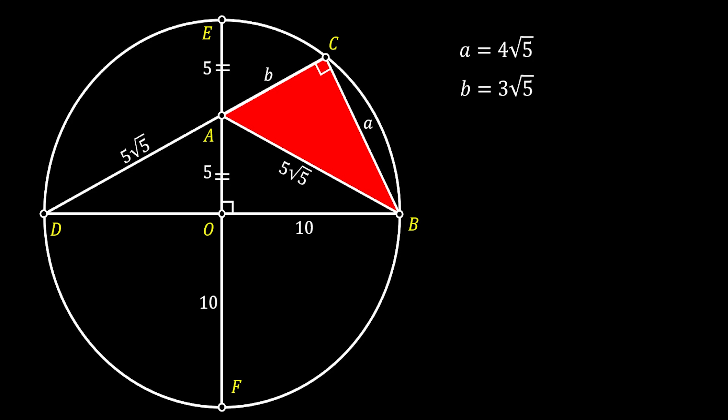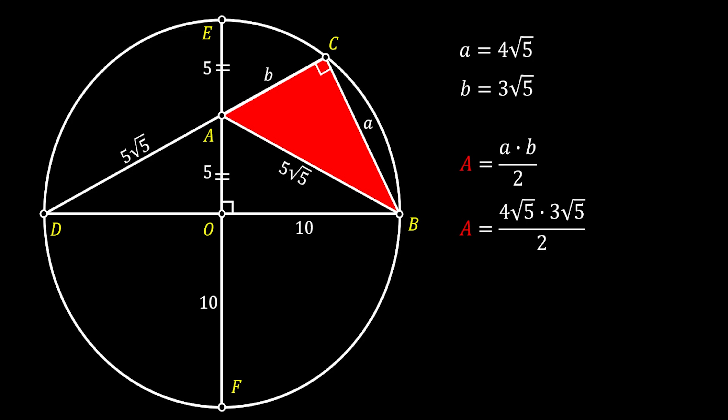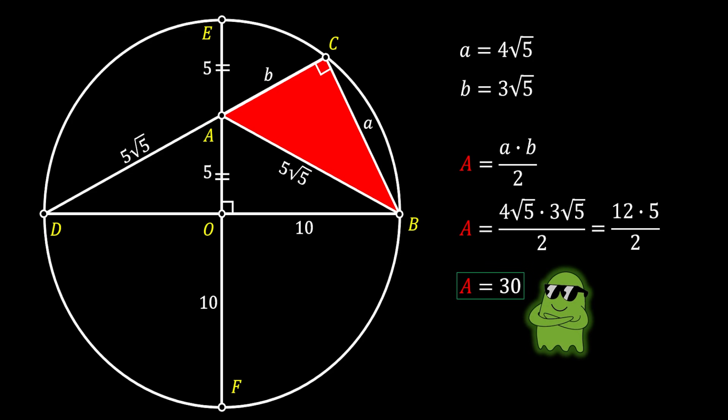The area of our red triangle is again half the product of its legs: (1/2)(4√5)(3√5) = 30 square units. All three methods confirm the same answer. I hope you enjoyed this interesting problem — if you did, leave a like and consider subscribing. If you found another way to solve it, write it in the comments, and until next time, take care.